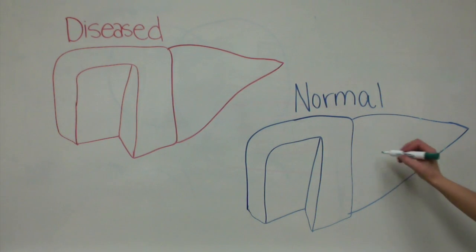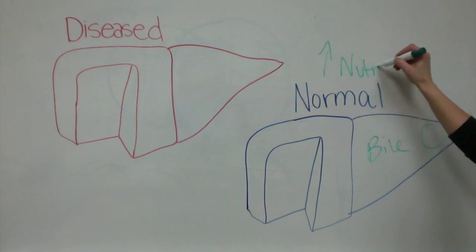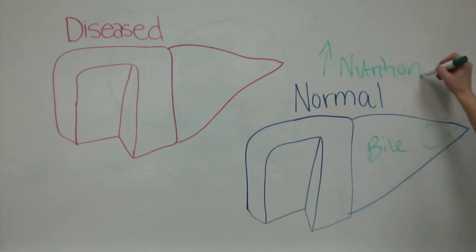Normally, the liver cell produces bile, which is needed to break down fats. Bile is combined with stomach acids and digestive fluid from the pancreas, which helps intestines absorb nutrients into the bloodstream.